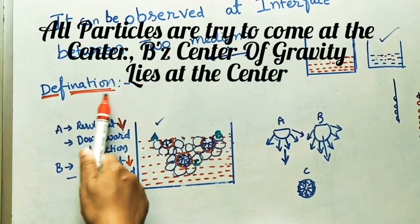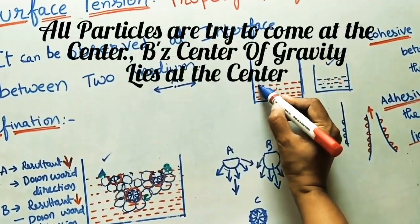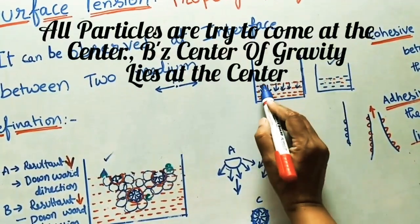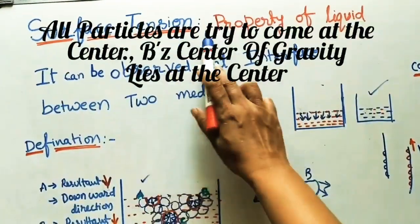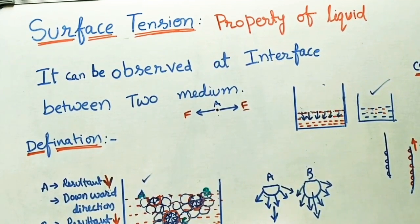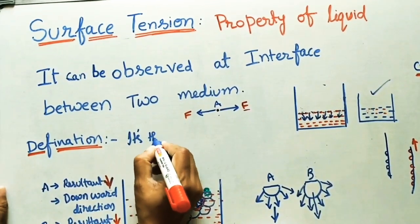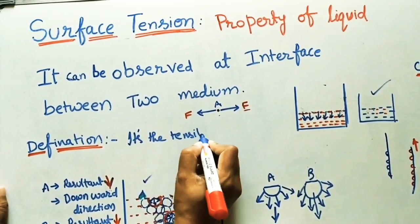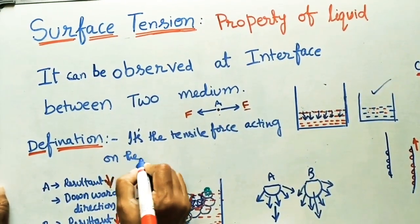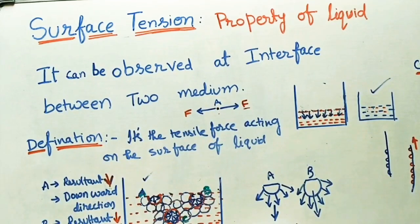This is the example for defining surface tension. Whatever surface particles are there, all will try to come in the downward direction — to the center of the liquid. So this surface is subjected to tension, and this is called surface tension. It is defined as a tensile force acting on the surface of a liquid because of cohesive forces. This is called surface tension.